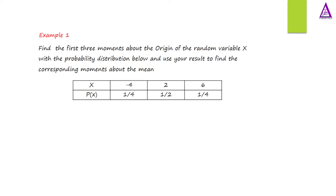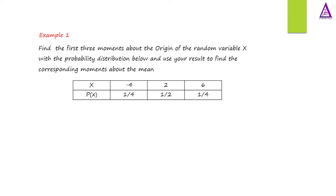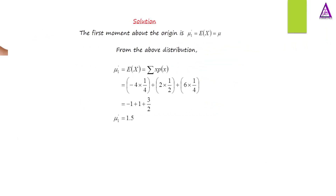Example one: Find the first three moments about the origin of the random variable x with the probability distribution below, and use your result to find the corresponding moments about the mean. We have x equal to negative 4, 2, and 6, with probability of x equal to 1/4, 1/2, and 1/4 respectively.